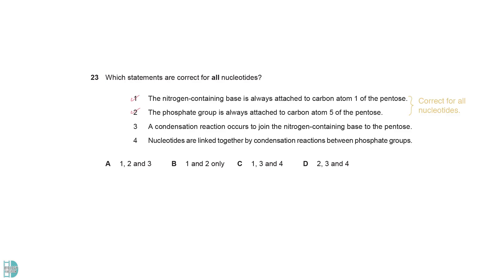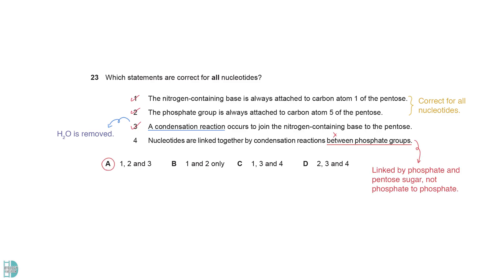One and two correctly describe the position of the nitrogenous base and the phosphate group in a nucleotide. Three is correct, as a water molecule is removed when they are joined together. Four is wrong because they are linked by their phosphate and pentose sugar, not phosphate to phosphate.